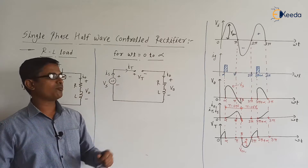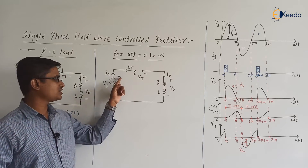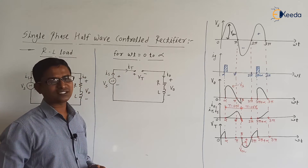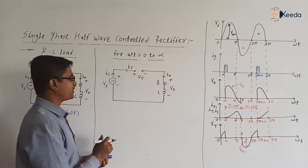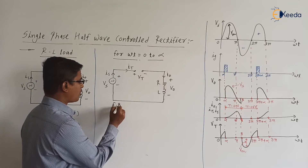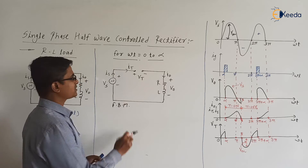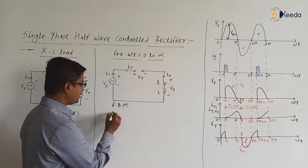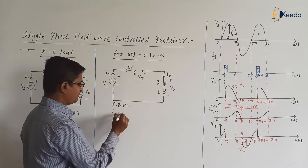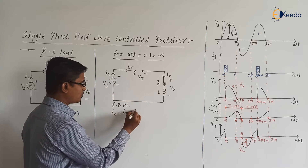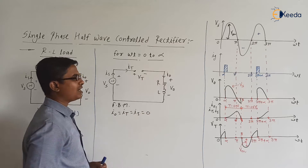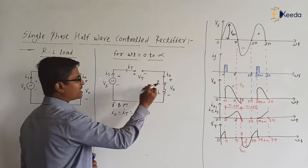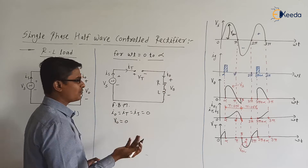From ωt = 0 to α, Vs is positive, so it is plus here and minus here, but we have not applied the gate signal to the thyristor. So our thyristor will be in the off state — mode of operation is forward blocking mode. Here thyristor is acting as an open switch. So what is the current in the circuit? It is zero. I₀ = It = Is = 0. Current in the load branch is zero, so what is the voltage across the load branch? It is also equal to zero.